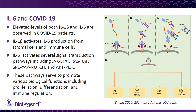IL-6 is an important cytokine in inflammation. IL-1β is a major activator of IL-6 expression, and it can be produced by almost all stromal cells and immune system cells. In light of the elevated IL-1β levels observed in COVID-19, one additionally observes a corresponding increase in IL-6 levels. IL-6 plays various roles in the immune response that can be both anti-inflammatory and pro-inflammatory, and affects several signal transduction pathways in various cell populations.